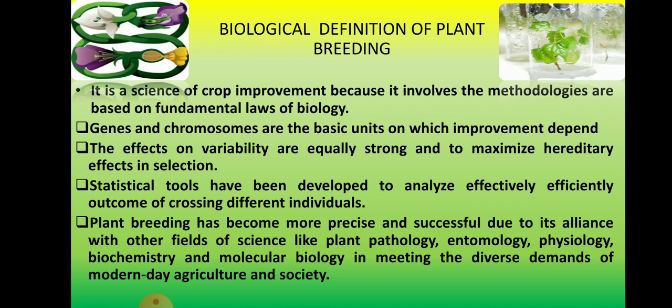Statistical tools have been developed to analyze effectively the outcome of crossing different individuals. This involves calculation using the Punnett Square and Mendelian law to compute the possible percentage or chances of the outcome of recombinants or offspring. Plant breeding has become more precise and successful due to alliance with other fields like pathology, entomology, physiology, biochemistry, and most importantly, molecular biology.